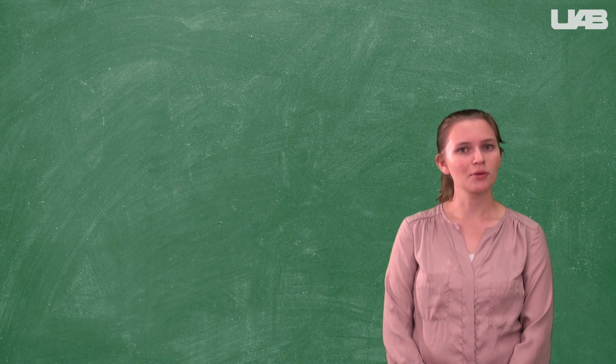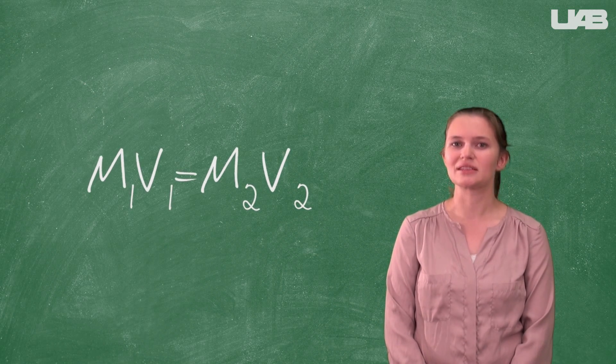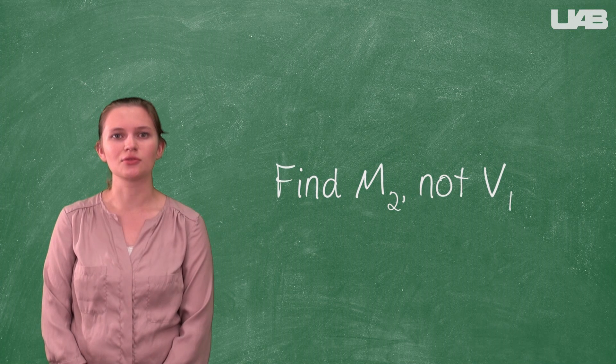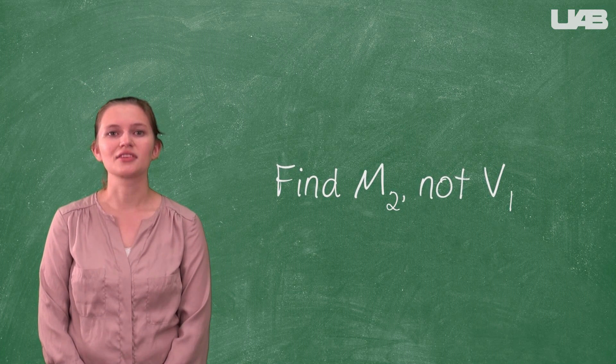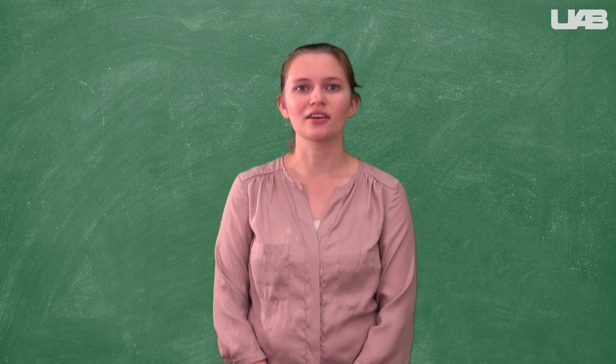Do you remember the formula that we used for dilution calculations? That's right, M1V1 equals M2V2. Just remember that you should be finding M2 when you make your dilutions. Do not solve for V1 and then try to deliver this exact volume with your pipette. It's very hard to do this.